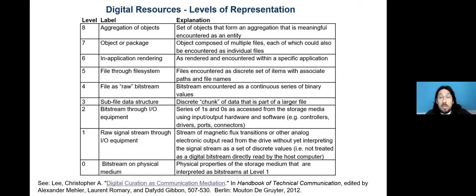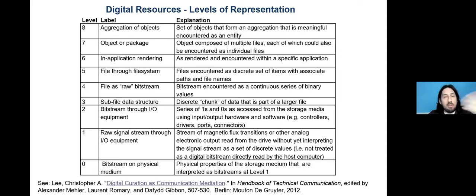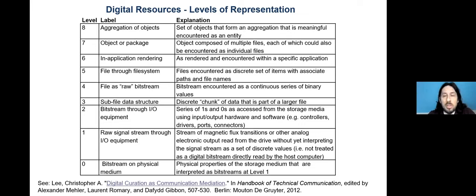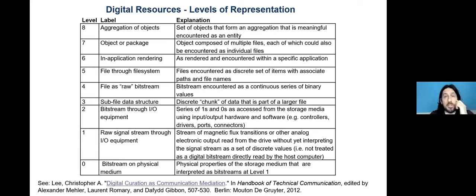Even below that, you can have the raw signal stream — the actual analog properties, whether audio signals or magnetic flux transitions that constitute the bit stream before it's interpreted as ones and zeros by the machine. Certain voltage levels are treated as a one or zero by drivers, but that doesn't mean they're objectively that. And finally, you have the bit stream on the physical medium itself.